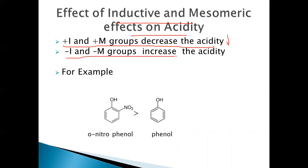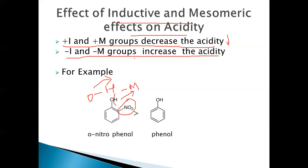Minus M and minus I groups increase acidity. For example, the nitro group is an electron-withdrawing, minus M effect group. It will decrease the electron density on the ring, and consequently decrease the electron density on the oxygen. This makes the O–H bond dissociation easy — the proton can be easily donated — so the compound is more acidic when electron-withdrawing or minus M effect groups are present on the ring.